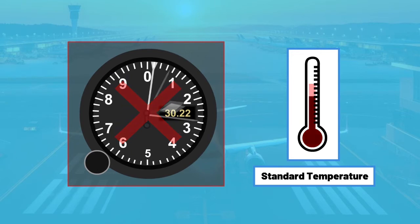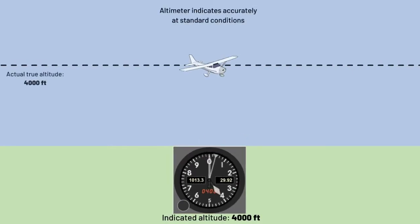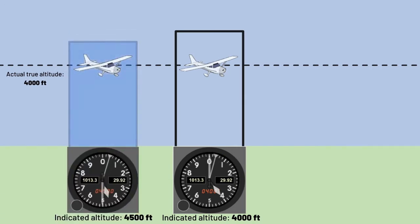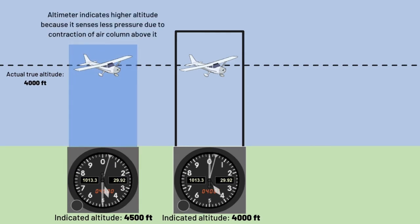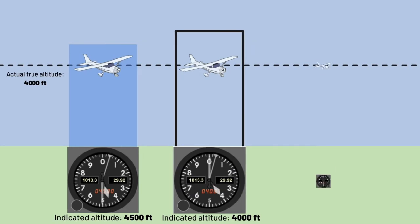When the temperature is not standard, we have no way of correcting for it on the fly, and therefore we have an error in our indicated altitude. On a standard day in terms of temperature, the altimeter has no errors. On cold days, the column of air measured by the altimeter is contracted — this results in the altimeter measuring less pressure above it. Less column of air equals less pressure. The altimeter sensing less pressure means the indicated altitude will be higher than it should be. This is where the mnemonic 'from high to low, look out below' comes from, because when you fly from a high temperature area to a low temperature area, the altimeter will read lower pressure and thus a higher indicated altitude, and you will be flying lower than you think you actually are.